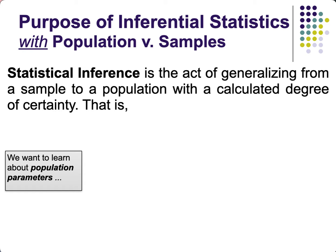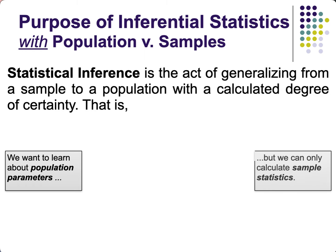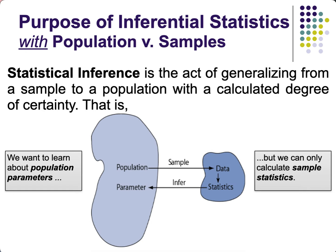We want to get values from parameters, not just from statistics. But in reality — referring back to our lesson on sampling — we can only obtain data from the sample, not the entire population. That is the reality, but we still want to get information about the population, and this is where inferential statistics plays its role.